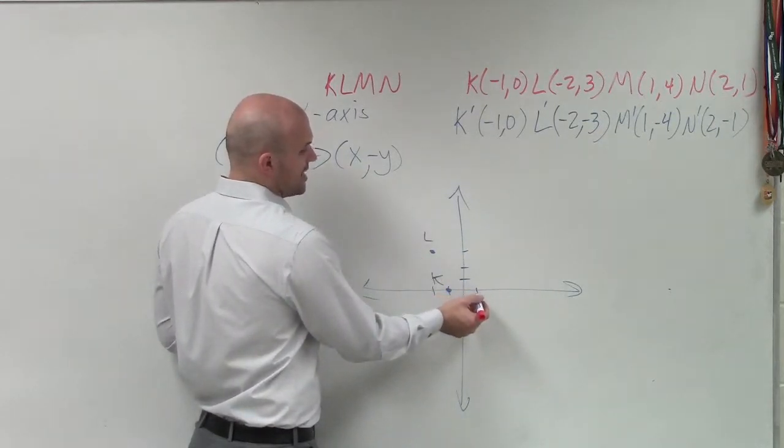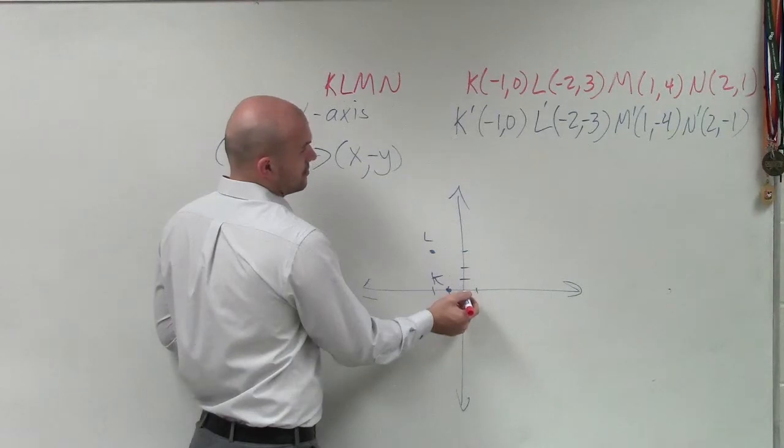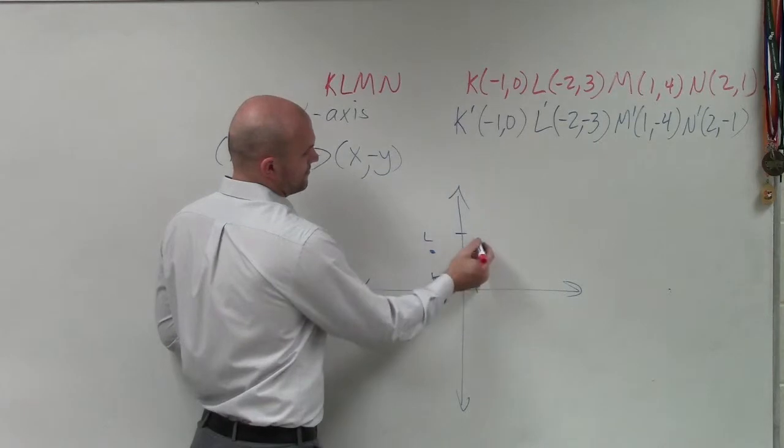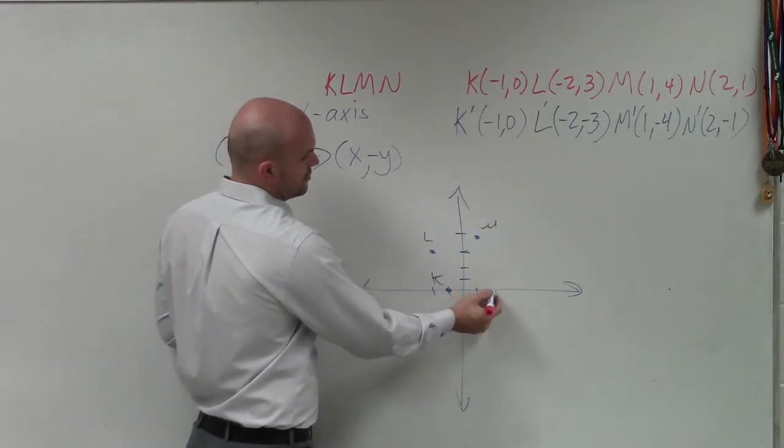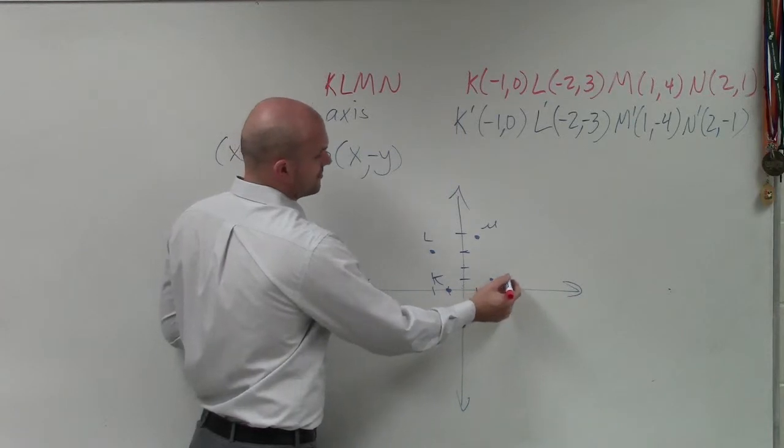Here, I have 1, 4. 1, 2, 3, 4. That's M. And here, I have 2, 1. That's N.